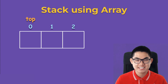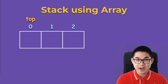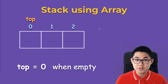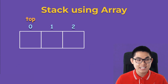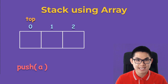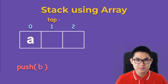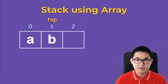To implement a stack using an array, let's say we have an array of size three and we initialize top to be at index zero. When top is at index zero we know the stack is empty. To push the letter A, wherever top is we just put A into the array and then increment top to move it to the right. For push B, again we put it wherever top is and then increment top.